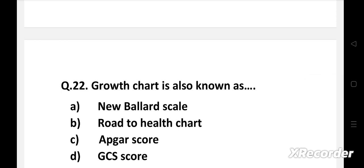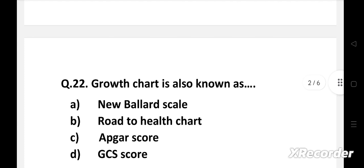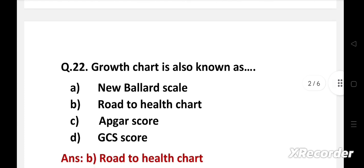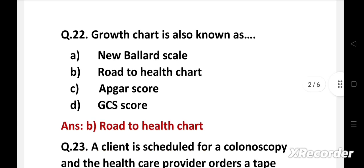Next question. Growth chart is also known as: Option A: New Ballard scale, B: Road to health chart, C: Apgar score, D: GCS score. Right answer is option B, road to health chart. A growth chart is used by pediatricians and other healthcare providers to follow a child's growth over time.